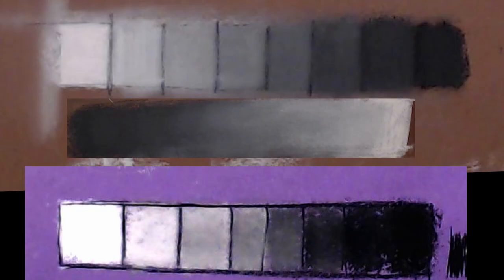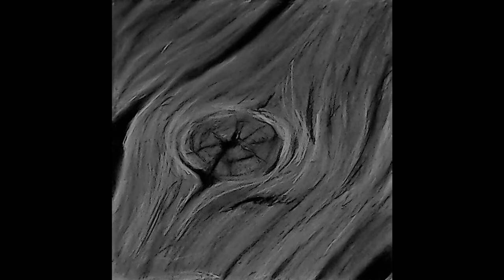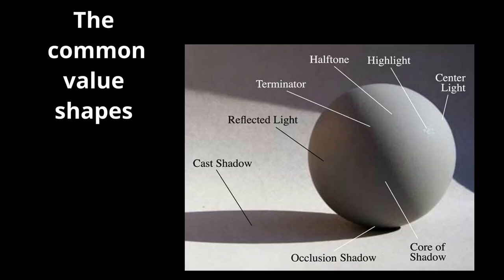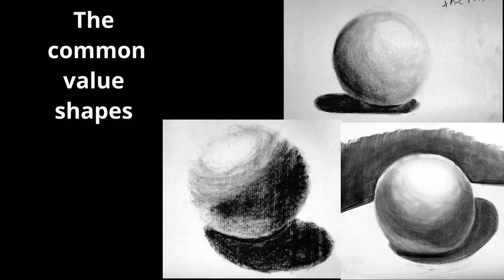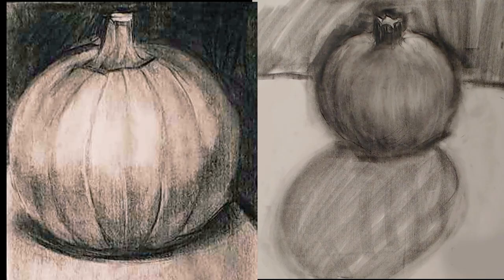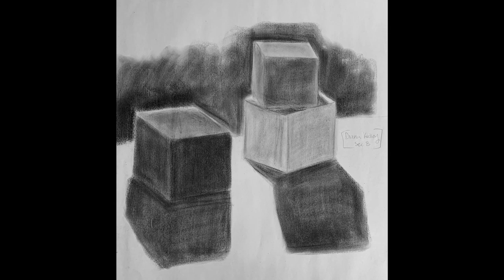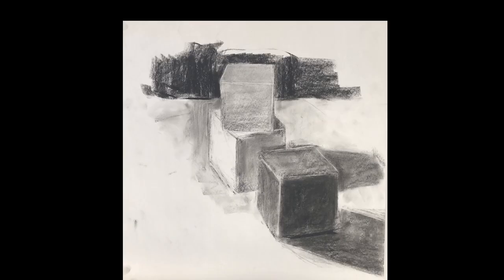Value is a result of light hitting form. We do texture studies in charcoal to start learning how to get our darks dark and our lights light. Then we learn the common value shapes and how they appear on basic shapes like spheres, pumpkins, and boxes.